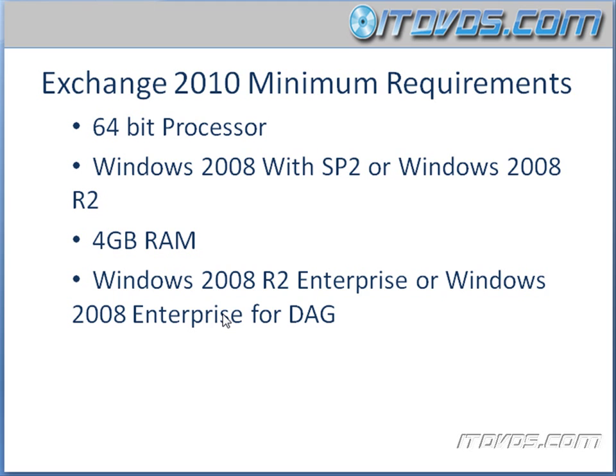This next one is actually pretty important for planning. If you want to use database availability groups in your Exchange 2010 environment, then you're going to want to install an enterprise version of Windows Server 2008 or Windows Server 2008 R2. The reason this is important is because if you install Windows Server 2008 Standard or Windows 2008 R2 Standard and then put Exchange on top of it, get everything up and running, and then decide you want to use database availability groups — well, there's no way to upgrade your Windows 2008 or Windows 2008 R2 Standard operating system to enterprise.